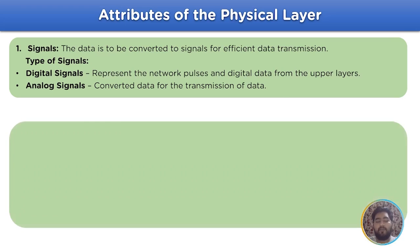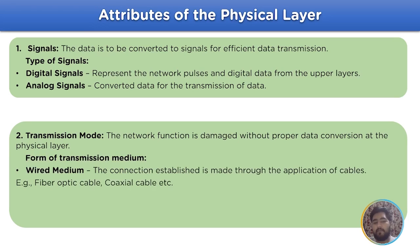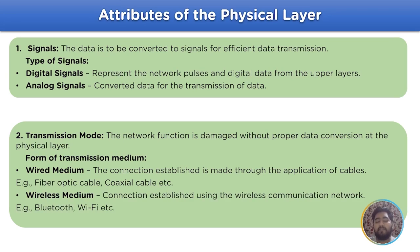The next attribute is known as transmission medium. The network function is damaged without proper conversion at the physical layer. It has two different types: wired medium, the connection established is made through application of cables, for example fiber optic cable and coaxial cable. And the second type is wireless medium, connection established using the wireless communication network, for example bluetooth and wi-fi.